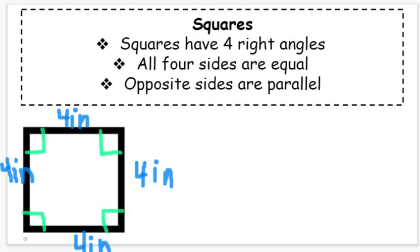So if we were asked is this figure a square, so far we'd be able to say yes because it has four right angles—90 degrees, 90 degrees, 90 degrees, and 90 degrees—and all four sides are equal. So each side measures four inches.